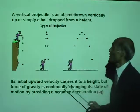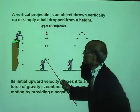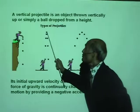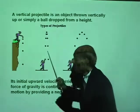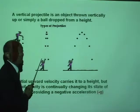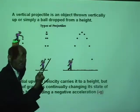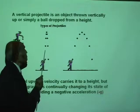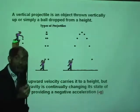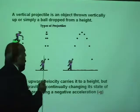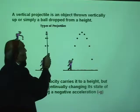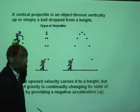When you give an object an initial upward velocity, it carries it to a certain height where the velocity becomes zero, and then it falls back. The moment the ball is released from your hand, the force of gravity acts on it. That is why the velocity gradually decreases — the force of gravity changes the velocity, decreasing it to zero and then increasing it in the opposite direction.